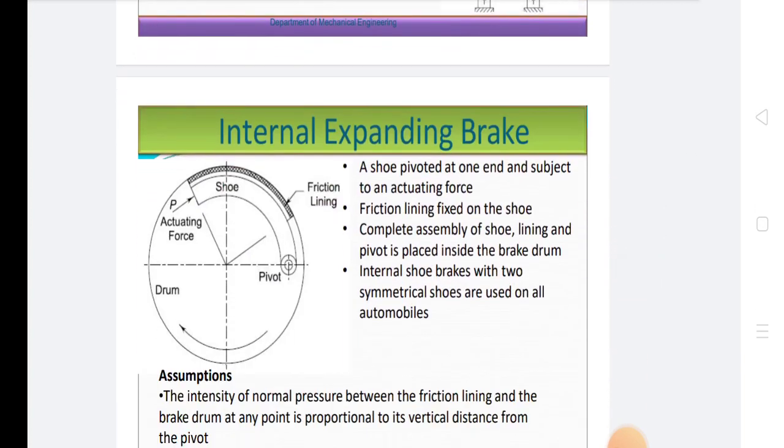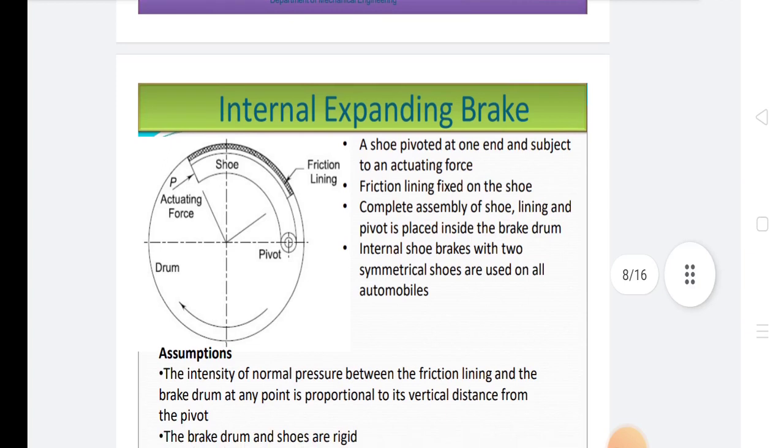After then, we discuss about internal expanding brake. In internal expanding brakes, a shoe pivoted at one end is subject to an actuating force. Friction lining fixed on the shoe, complete assembly of shoe, lining, and pivot is placed inside the brake drum.